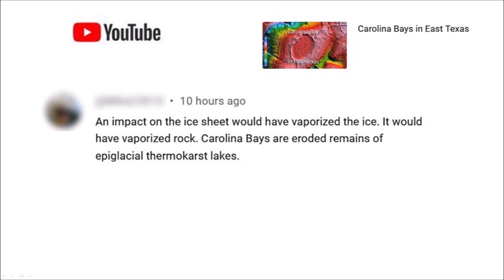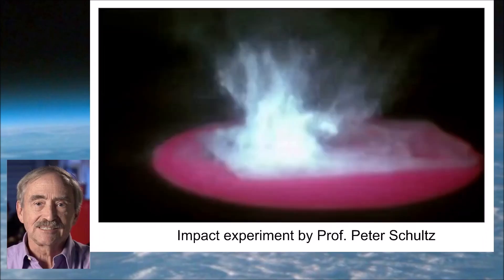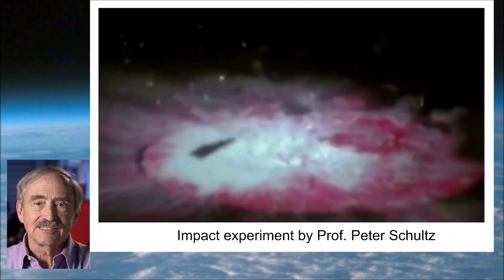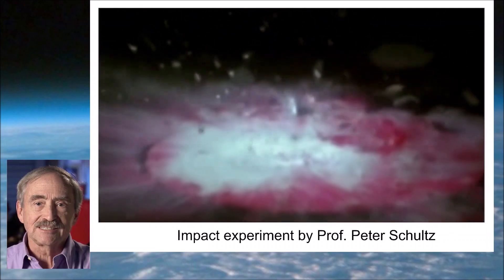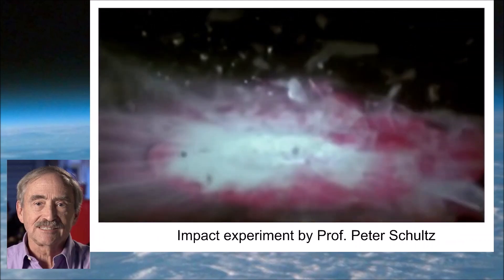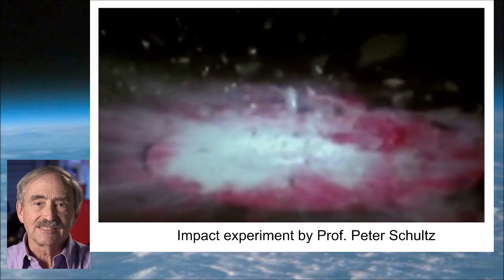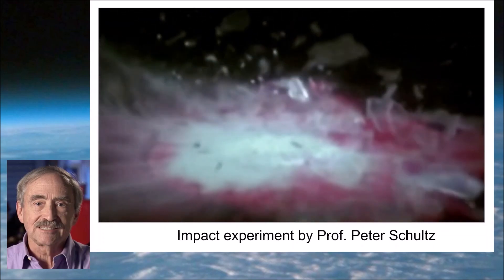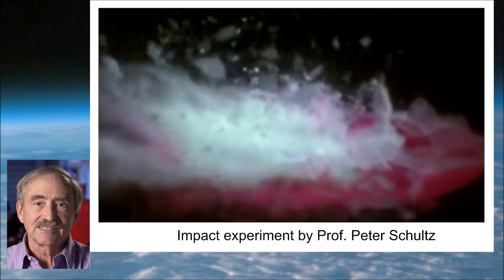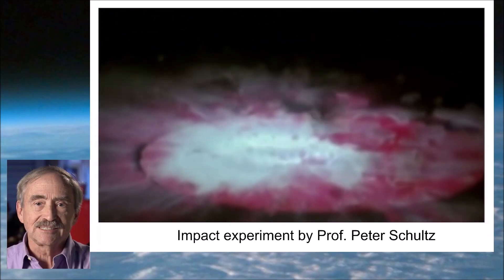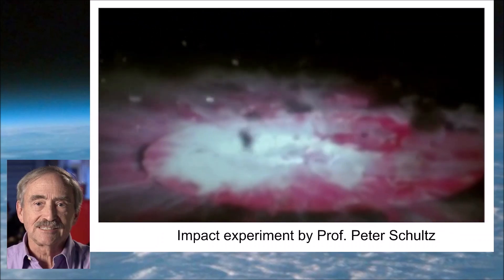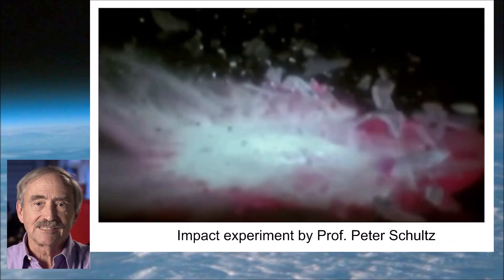He said an impact on the ice sheet would have vaporized the ice. The idea that an impact on an ice sheet just melts or vaporizes the ice is very common, but it is 98% wrong. Professor Schulz from Brown University has shown that high-speed impacts on an ice sheet break up the ice sheet and the ice pieces are ejected in ballistic trajectories from the impact site. Most of the kinetic energy of the projectile is transferred as kinetic energy to the ice pieces created by the shock of the impact, and only a small portion of the energy gets converted to heat to melt the ice and vaporize the meltwater.